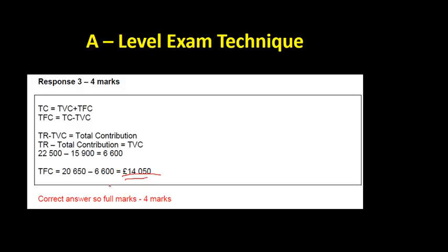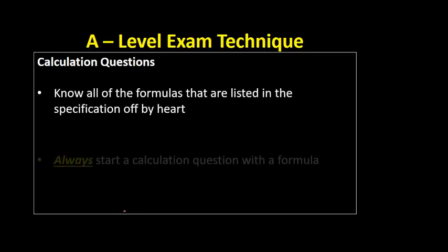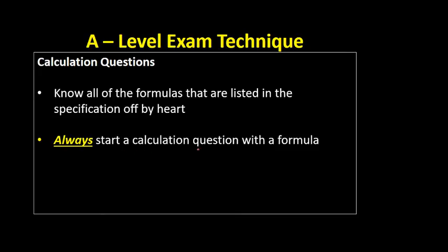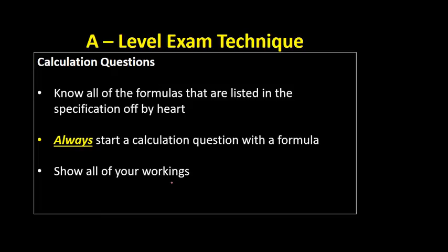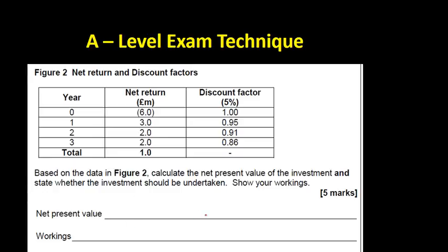The correct answer with the pound sign in front gets four marks. To reiterate: make sure you know all the formulas off by heart; always start a calculation question with a formula; show all of your workings so you can get maybe three out of four even with the wrong final answer; and make your final answer very clear. AQA do help you with this — for example, on a net present value question they give you a clear space to write your final answer, so do follow the exam paper layout.